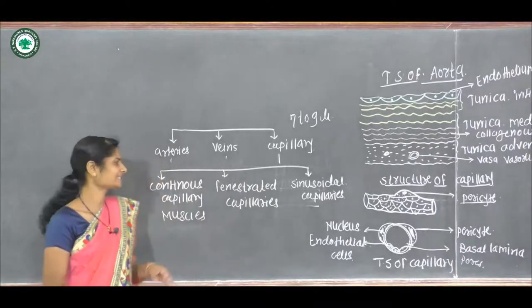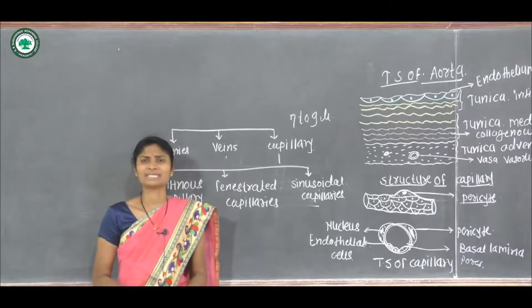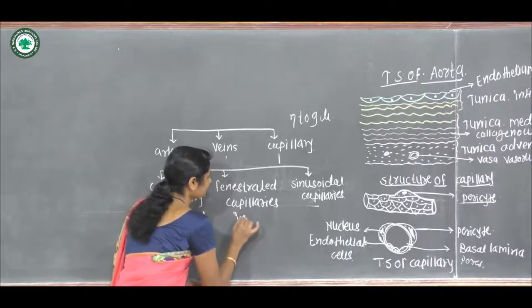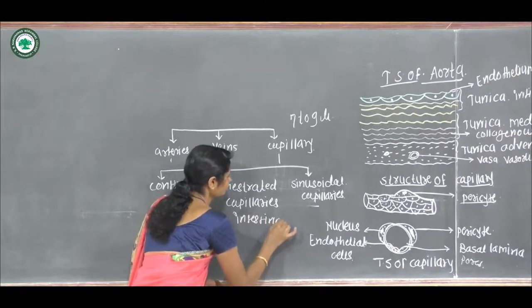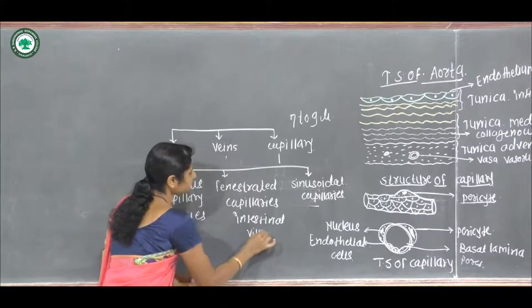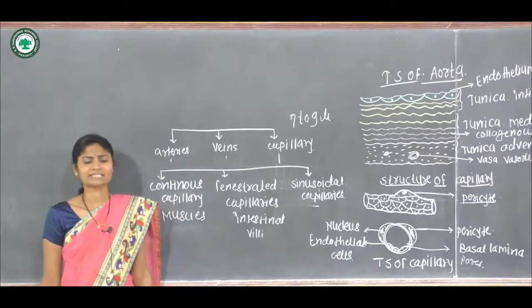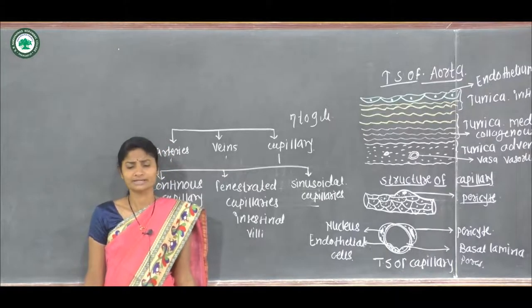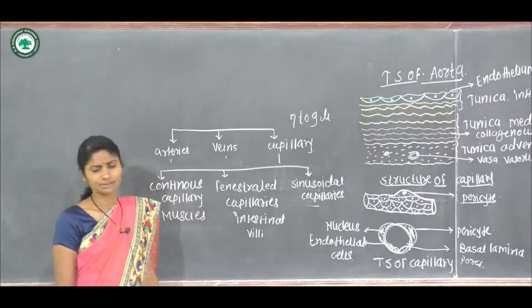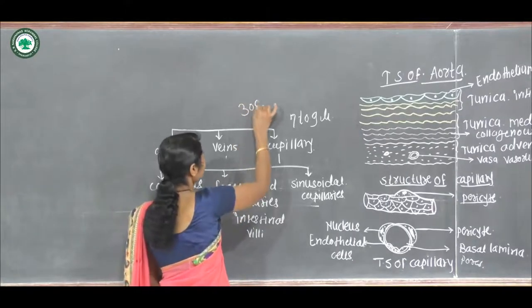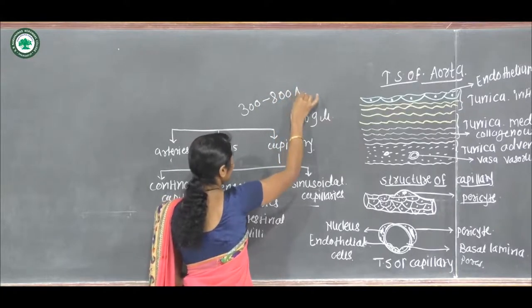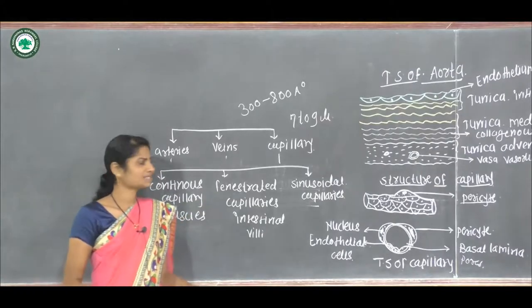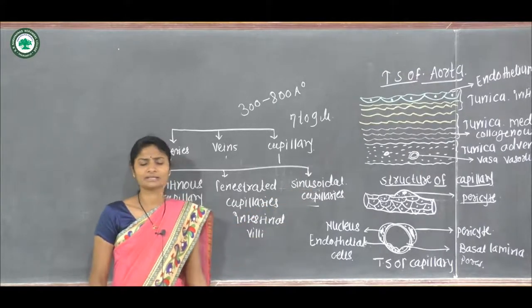The next type is fenestrated capillaries. These are found in the intestinal wall. The endothelium has numerous fenestrations, also called pores, which are about 300 to 800 angstrom units in size.